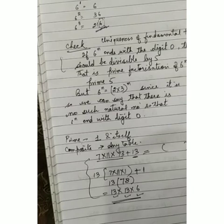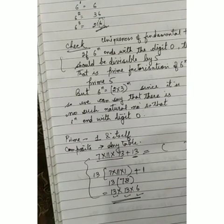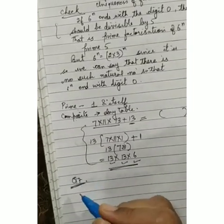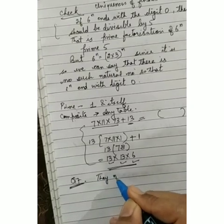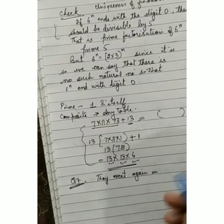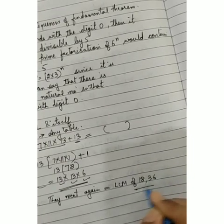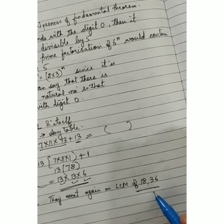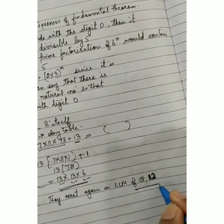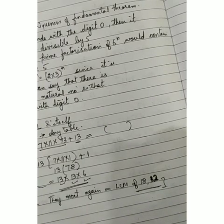Question number 7 is that there is a circular path around a sports field. Sonia takes 18 minutes to drive one round of the field, while Ravi takes 12 minutes for the same. Suppose they both start at the same point and at the same time and go in the same direction. Then after how many minutes will they meet again at the starting point? So question number 7, the time at which they will meet again, this will be equals to the LCM of 18 and 12. You have to find the LCM of 18 and 12. Whatever you get the LCM, they will meet again after those many minutes.